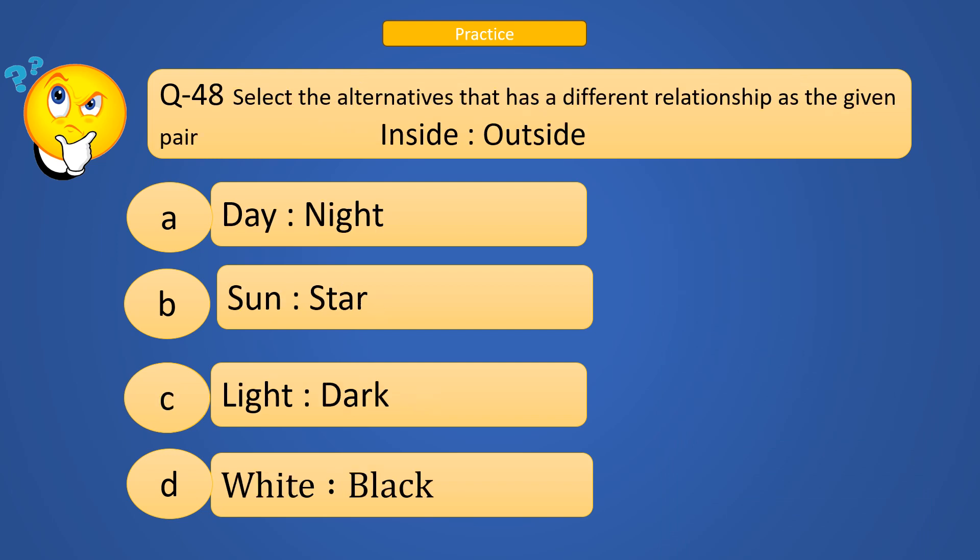Next question. Select the alternatives that has different relationship as the given pair Inside : Outside. Which one is the correct option? Day : Night, Sun : Star, Light : Dark, White : Black.